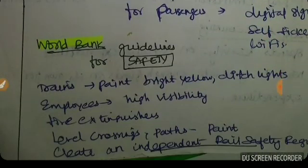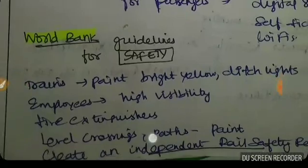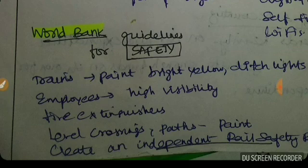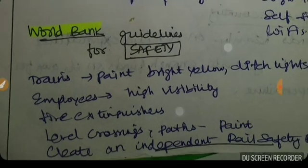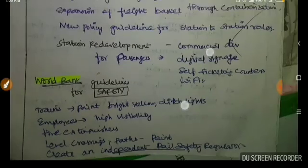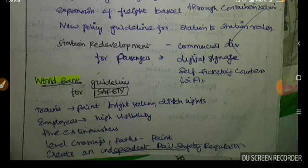The World Bank recommends focusing on safety in India. Trains need safety upgrades to prevent accidents. Employees need to be better trained. Fire extinguishers must be adequately provided. Level crossings must be eliminated by building bridges — this is a key target. An independent railway safety regulator should be established.